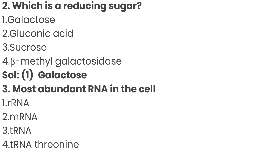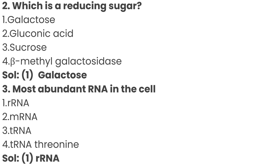Question number 3: most abundant RNA in the cell? Option 1: rRNA, Option 2: mRNA, Option 3: tRNA, Option 4: tRNA threonine. The correct answer is Option 1: rRNA is the most abundant RNA in the cell.